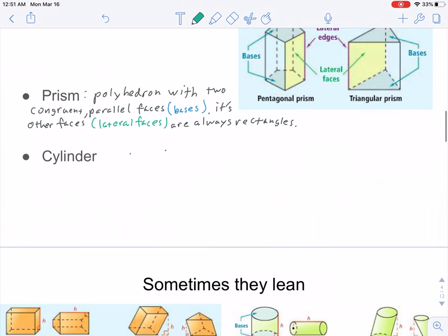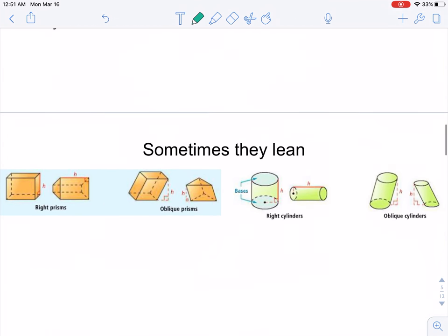Now, what are we going to do with these? Sometimes they lean. So, although they're definitely parallel, they're not necessarily directly over each other. This is where we get oblique prisms, and we'll talk about cylinders in a moment.